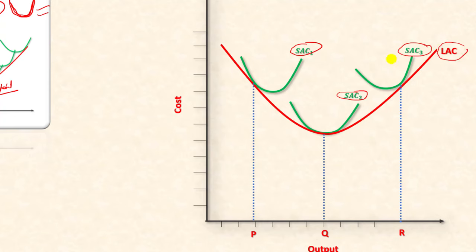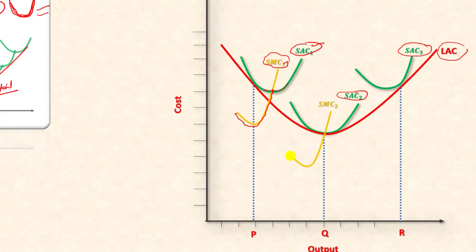We call the long run average cost curve U-shaped — it is also called the envelope curve and the planning curve. Now let's talk about the long run marginal cost. Each plant has a short run marginal cost curve that is first downward sloping and then upward sloping, cutting the short run average cost curve at its minimum point. The same applies to the second and third plants.